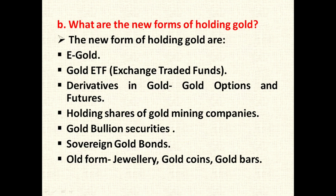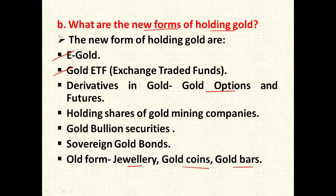The next question is: what are the new forms of holding gold? Gold is one of the precious metals and a real asset. In olden days, people used to hold gold in the form of ornaments, jewelry, gold coins, or gold bars. Nowadays, there are many new forms of gold: e-gold (electronic gold), gold ETF (gold exchange traded funds), derivatives in gold such as gold options and gold futures, investment in gold mining companies, gold bullion securities (GBS), or sovereign gold bonds.